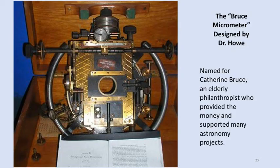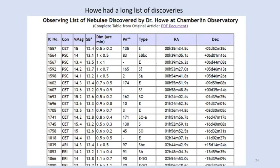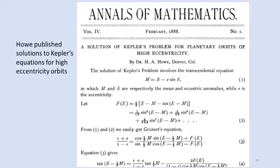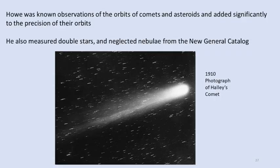Professor Howe also built a very advanced micrometer called the Bruce micrometer because, of course, Catherine Bruce of New York City donated the money. With it, Howe could measure the location and size of nonstellar objects with great precision using the crosshairs in the eyepiece. Howe discovered many nebular objects and cataloged their right ascension and declination as shown in this table. He also published solutions to the orbits of comets and greatly increased the precision of Halley's comet's orbit through his detailed observations.